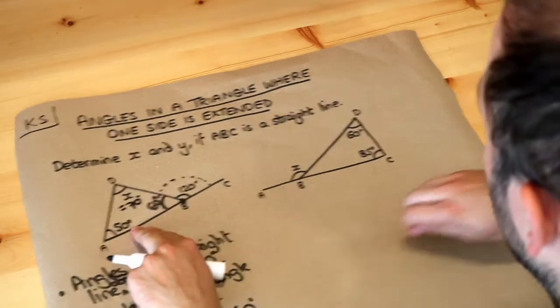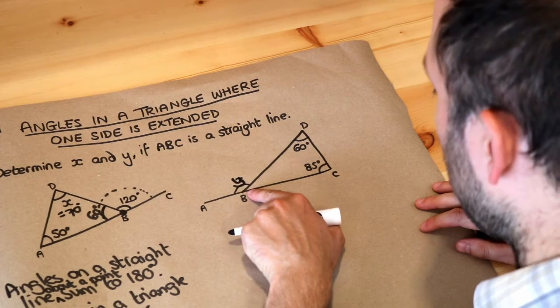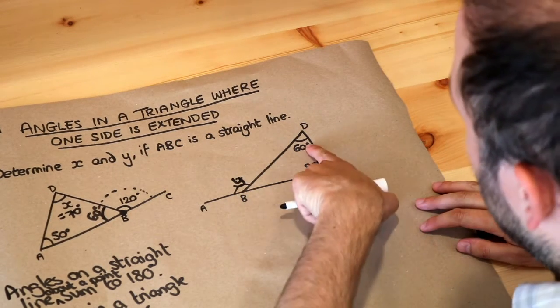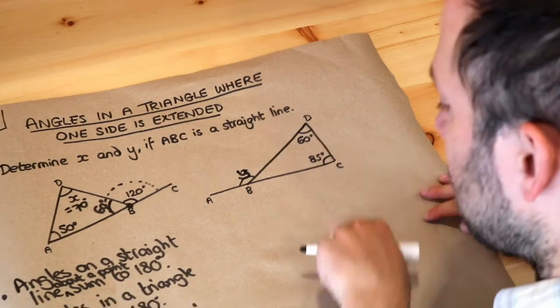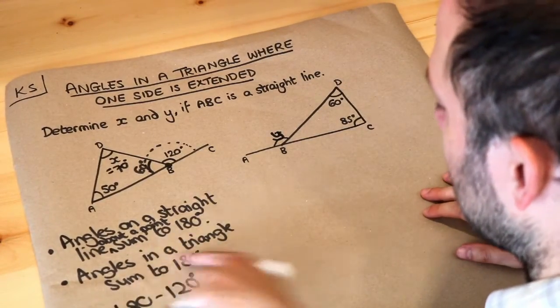That's that question done. Now what about this one? We can't start with this straight line here because we don't know what the angle y is. However, we do know two of the angles in the triangle so this time we're going to use this angle theorem first that angles in a triangle sum to 180.